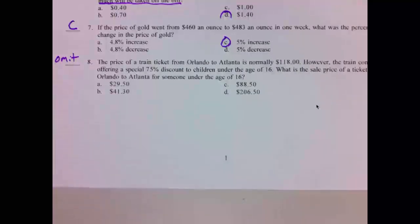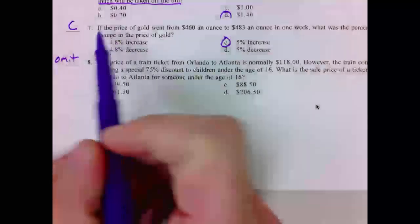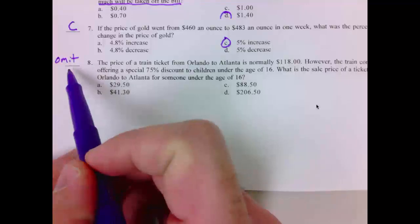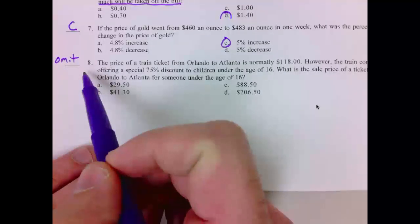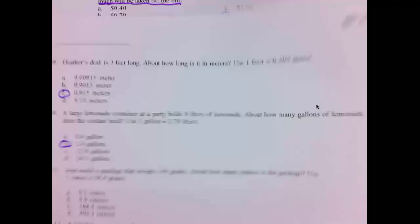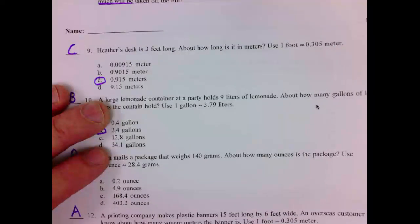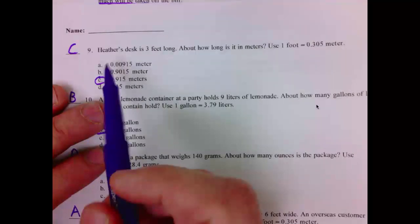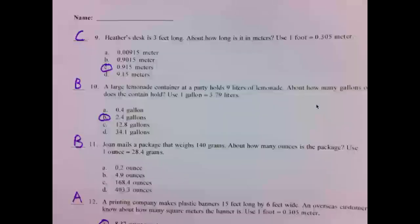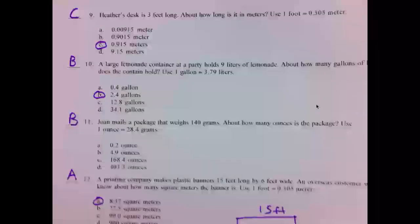In this video, we're going to finish grading our quiz. I'm going to go straight to the answers. Number 7 is C. Number 8 we're omitting—it's the same as number 4 from above. Number 9 is C, number 10 is B, number 11 is B, and number 12 is A.